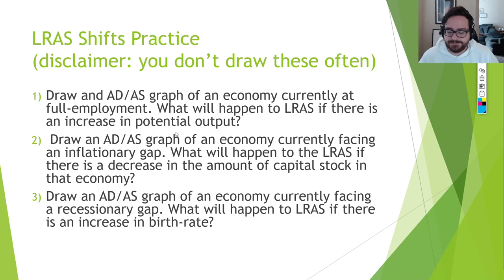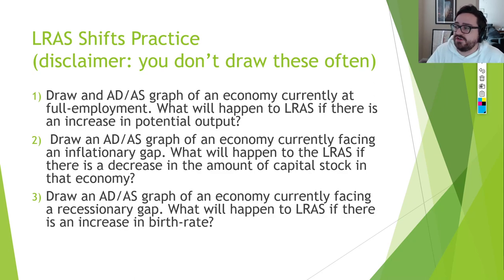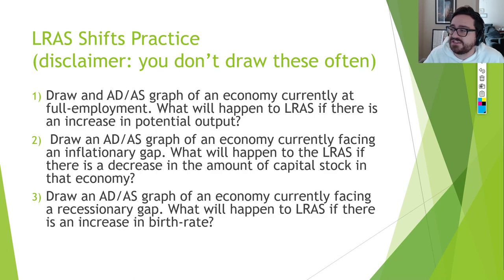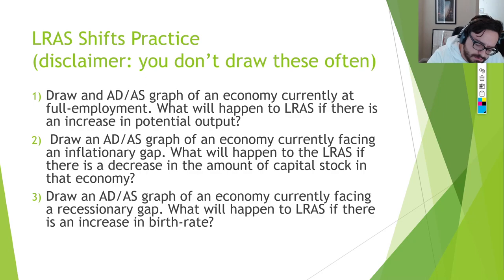Here are some practice problems to work through two skills: knowing how to draw the AD-AS graph with LRAS, and knowing how to draw an LRAS shift. A shift is just a right or leftward movement of the vertical line. For question one: draw an AD-AS graph of an economy currently at full employment. That means the economy is doing well — so I draw SRAS and AD first, and then draw LRAS right through the middle, intersecting both lines.